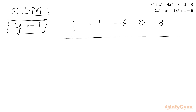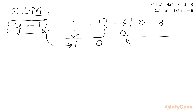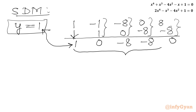The leading coefficient 1 carries down. Multiplying 1 × 1 = 1, adding gives 0; 1 × 0 = 0, adding gives -8; 1 × (-8) = -8, adding gives -8; 1 × (-8) = -8, adding gives 0. The resulting cubic equation is y³ - 8y - 8 = 0.